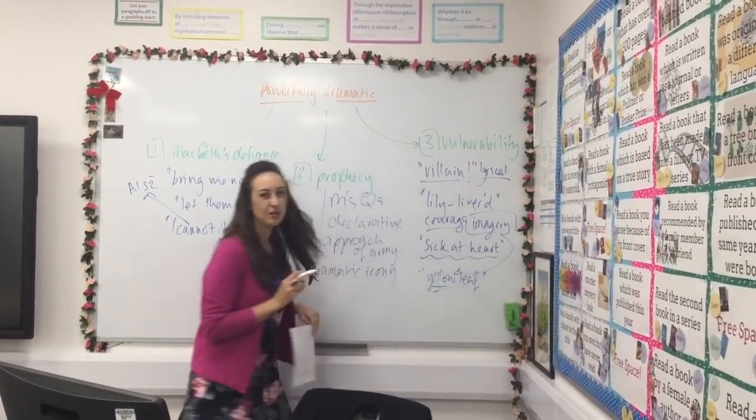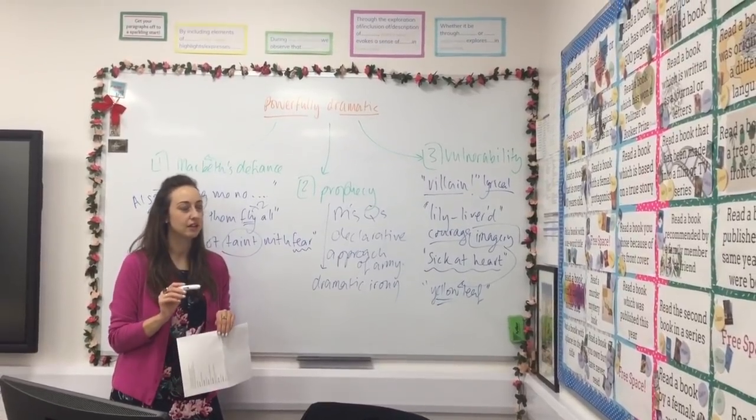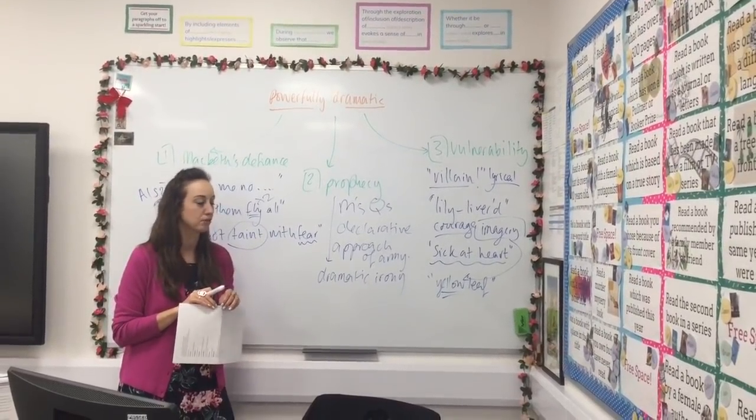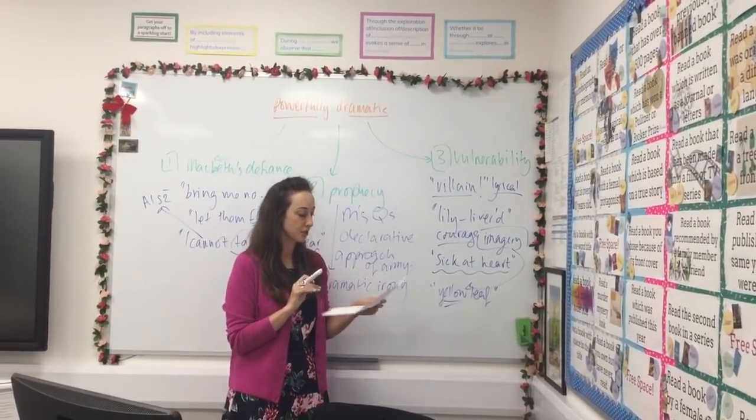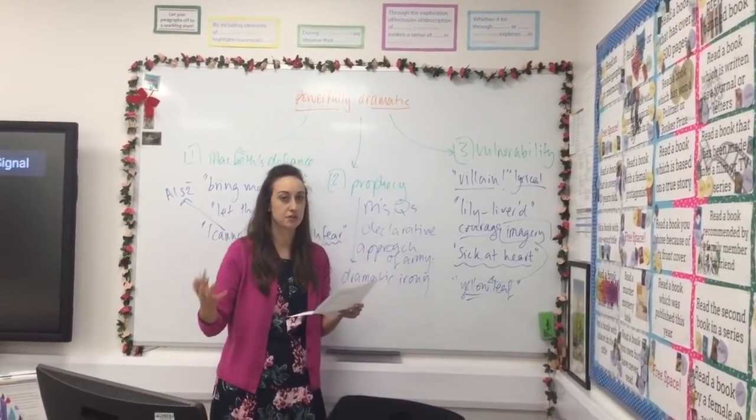And that adjective yellow leaf as well is quite interesting. You don't want to be a yellow leaf because that suggests you're a tree that's approaching autumn or on its way out, so that certainly suggests to us that he knows his time is approaching.